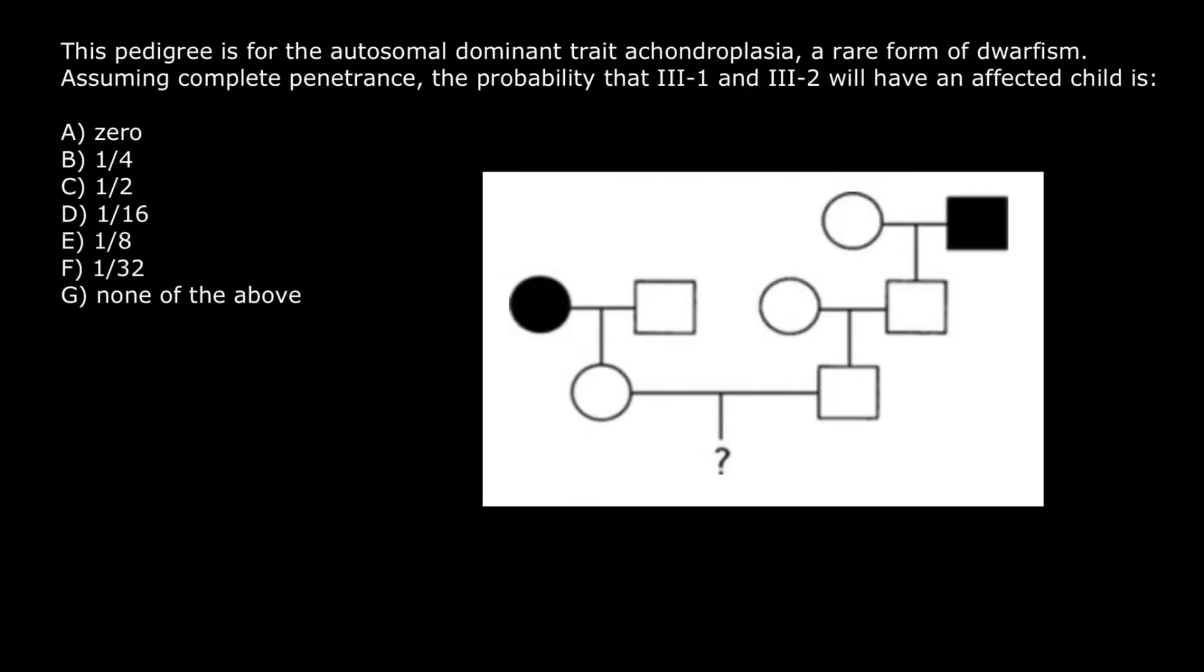For example, this person here has one defective allele on one of the chromosomes and another one is normal. And this person here also has one defective chromosome, or chromosome with defective allele, and one normal.